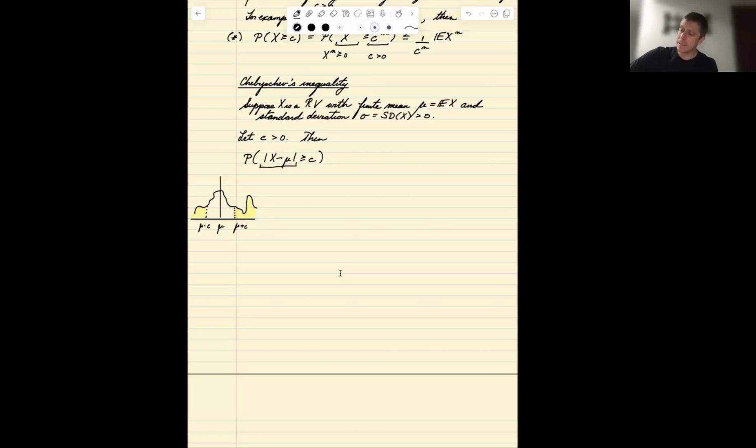So even though x does not have to be non-negative here, when we take the absolute value, that's a function of the random variable which is non-negative. A function of a random variable is a random variable. So this is a non-negative random variable. And so we can take powers on either side. And the power that I'm going to choose to take is I'm going to choose to square both sides.